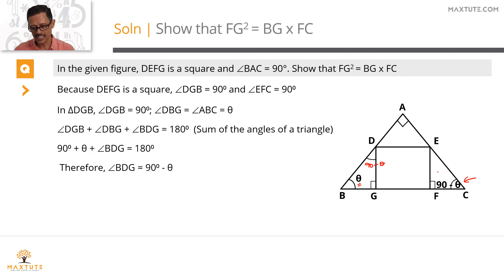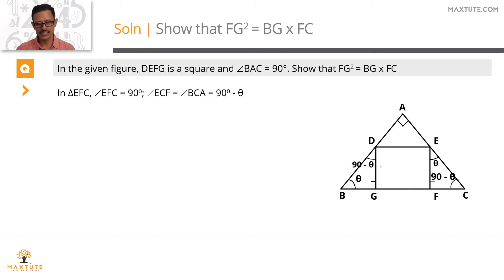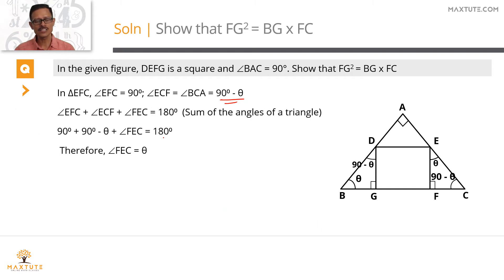Now for triangle 2: in triangle EFC, angle EFC is the exterior angle of the square, so it equals 90 degrees. Angle ECF is the same as angle ACB = 90 − θ. Therefore the third angle, angle FEC, must equal θ. To summarize: angle EFC = 90, angle ECF = 90 − θ, and angle FEC = θ.